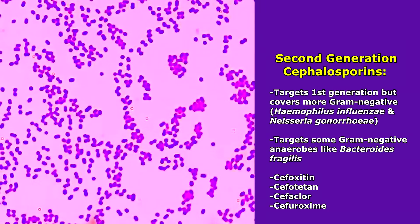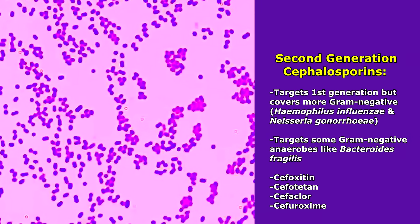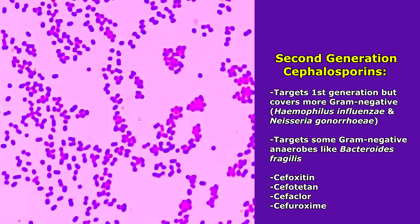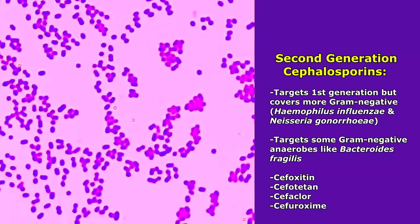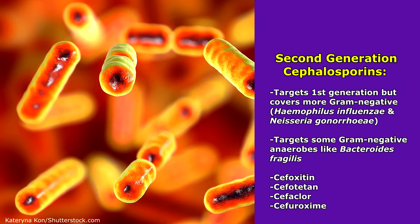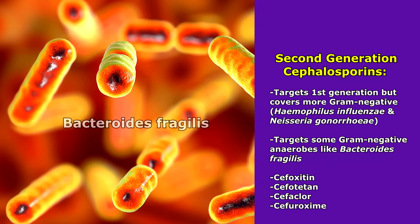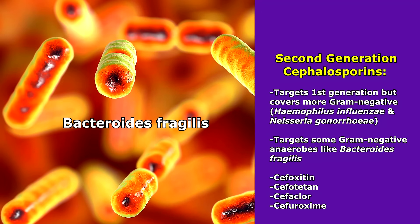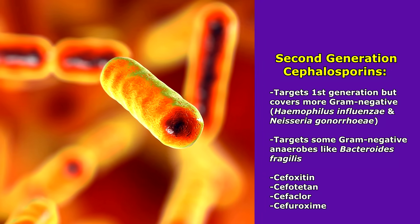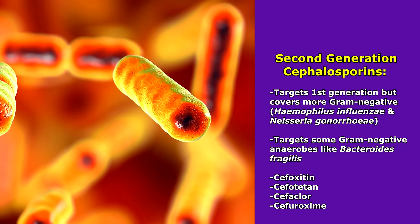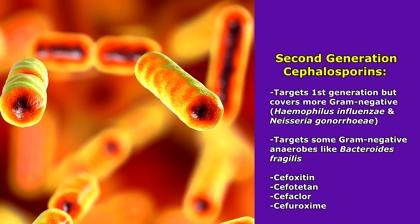Next is the second generation of cephalosporins. This generation can target what the first generation did, but it expands coverage to include some more gram-negative bacteria such as Haemophilus influenzae and Neisseria gonorrhoeae. It can also target some gram-negative anaerobes such as Bacteroides fragilis — two particular medications that can do that are cefoxitin and cefotetan. Other medications in this generation include cefaclor and cefuroxime.